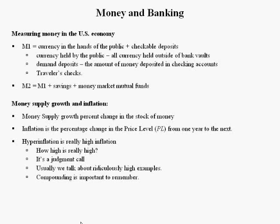Compounding is very important to remember when we're talking about inflation. A lot of people don't think 10% inflation is all that big of a deal — compared to 135 million percent inflation in Zimbabwe, 10% seems rather modest. However, because of compounding, it can be problematic rather quickly. For example, suppose you're currently buying something today that costs $100. If inflation remains at 10% for seven years, after the first year that $100 item will cost you $110. After the second year, it would cost you $121.